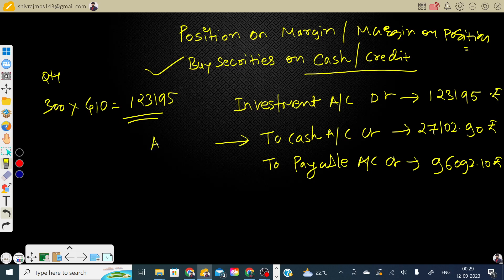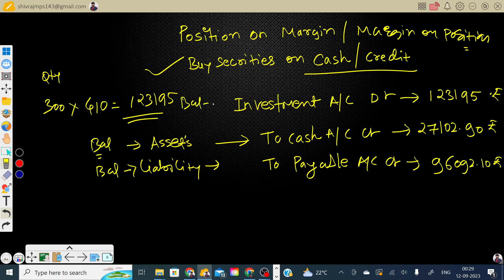You can record this on the asset side of the balance sheet. This means cash balance reduces, liability increases, and investment increases on the asset side — it balances out perfectly.